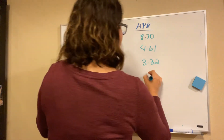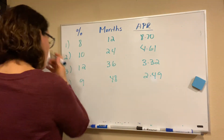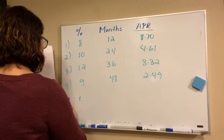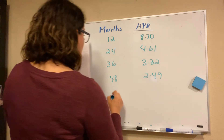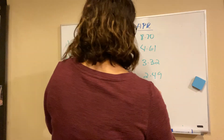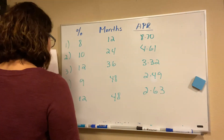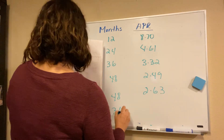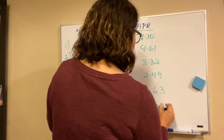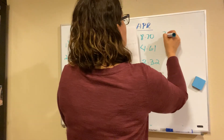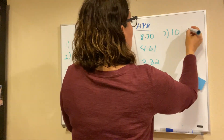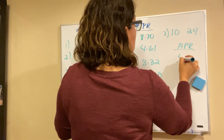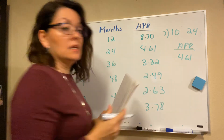Number five: 12% for 48 months. Number six: 10% for 30 months, APR is 3.78. And number seven: 10% for 24 months, so the APR for number seven is 4.61.